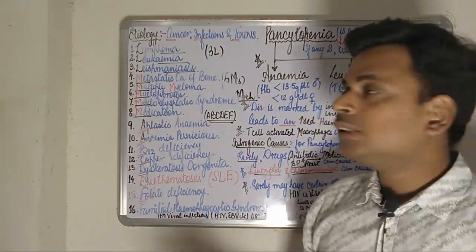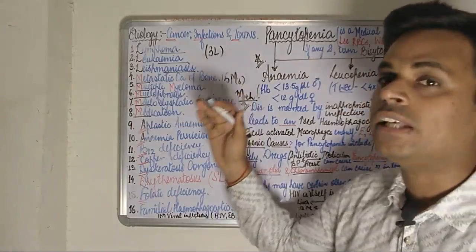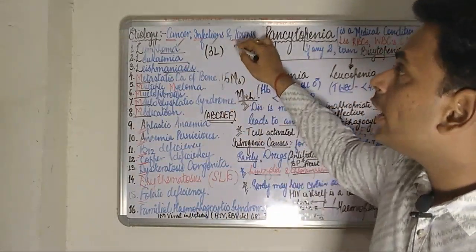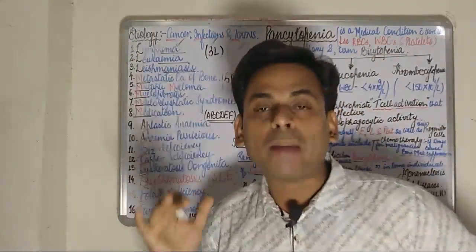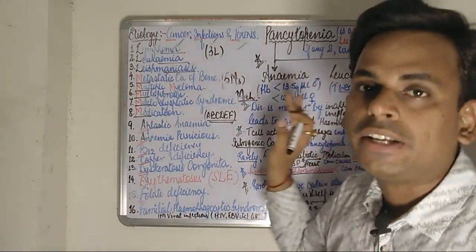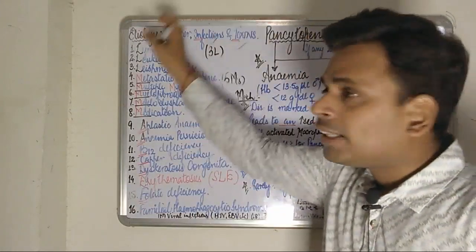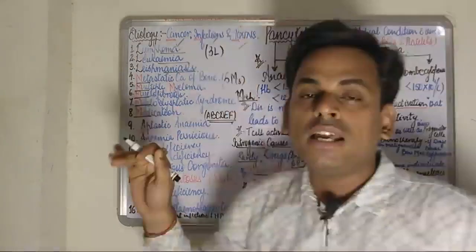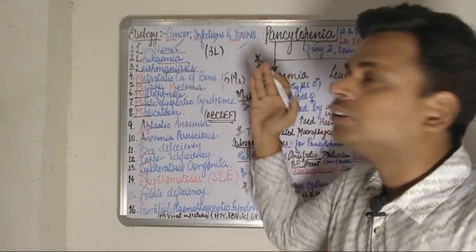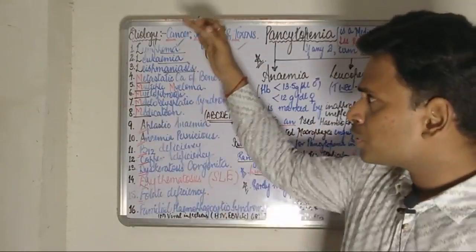When it comes to writing the etiology in professional exams, it can be difficult to sequence the entire list of causes responsible for pancytopenia. In broader terms, the etiology can be classified as either cancer, infections, or toxins — these three conditions are the chief etiological factors responsible for causing pancytopenia.